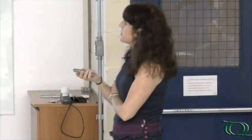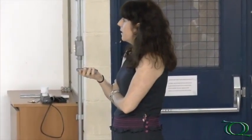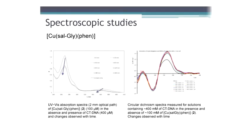We did some spectroscopic studies by UV-visible absorption and also by circular dichroism. We incubated the copper complex — specifically Sal-Bpy-Phen — at 100 micromolar concentration with calf thymus DNA at a 1 to 4 ratio, and followed this with time. We saw a decrease in the intensity of the spectrum upon mixing.